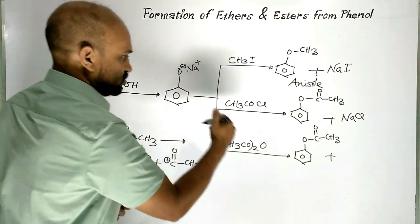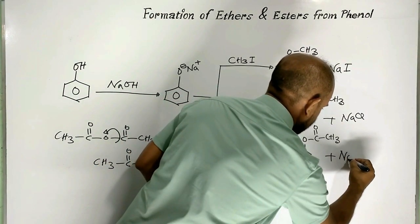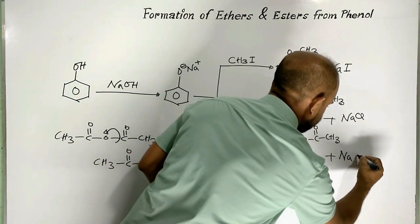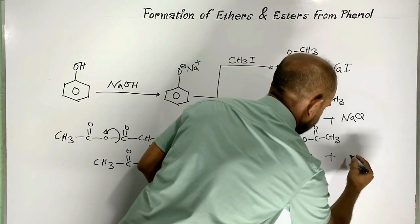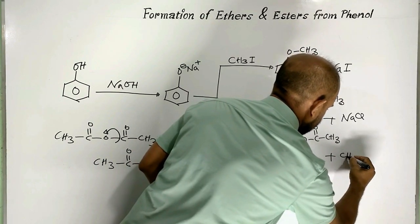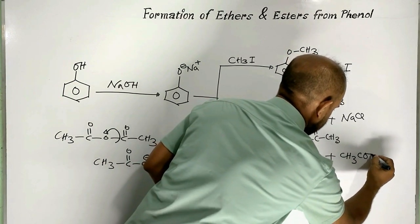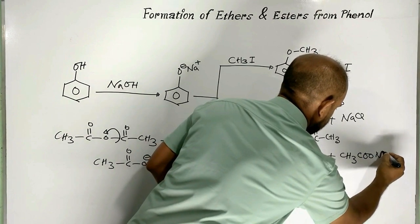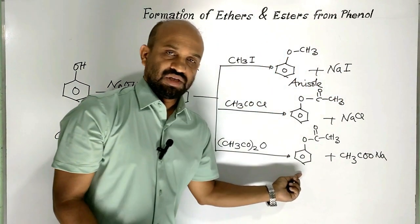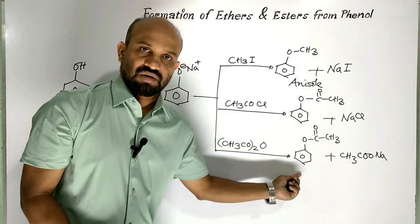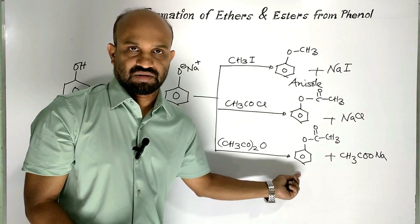The acetate anion combines with sodium to form sodium acetate as a byproduct. This ester formed is phenyl acetate.